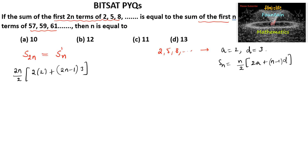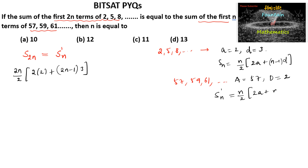Coming to the second sequence 57, 59, 61, ... the first term a = 57 and common difference d = 2. The sum to n terms is written as n/2 times (2a + (n−1)d).